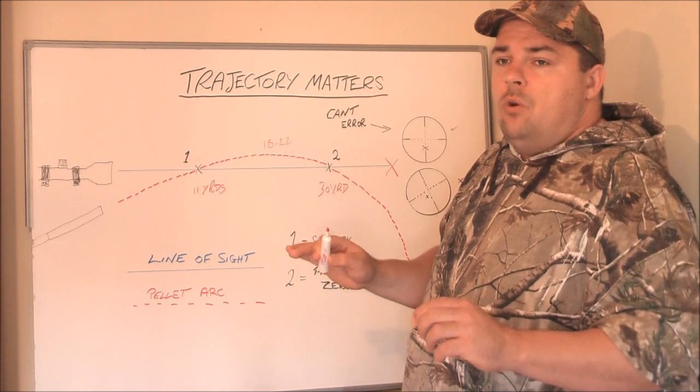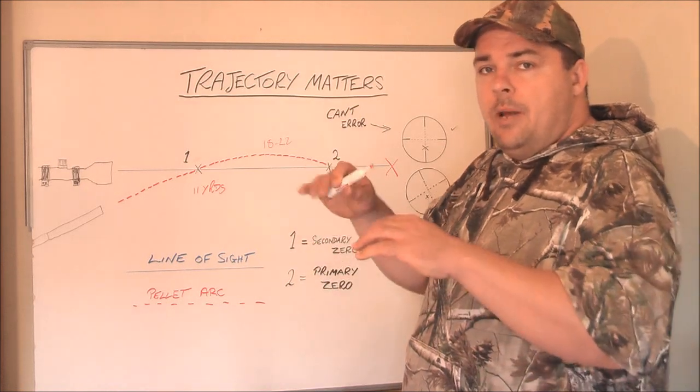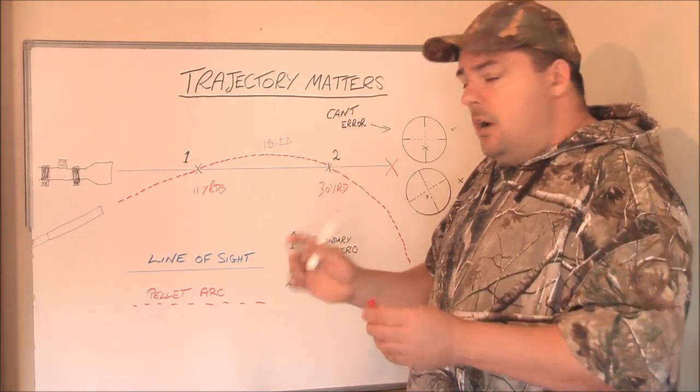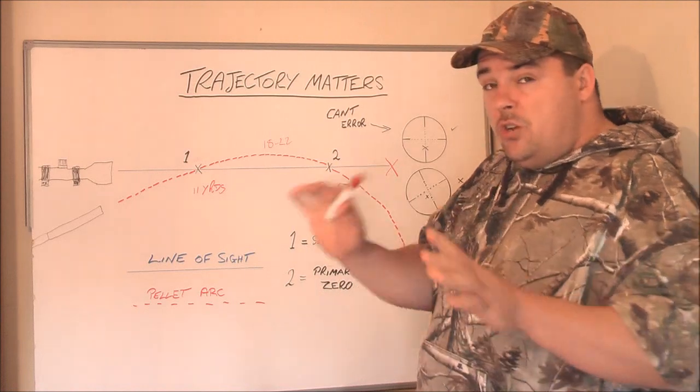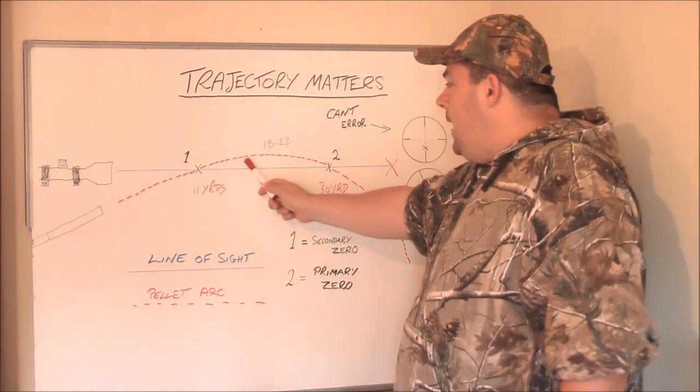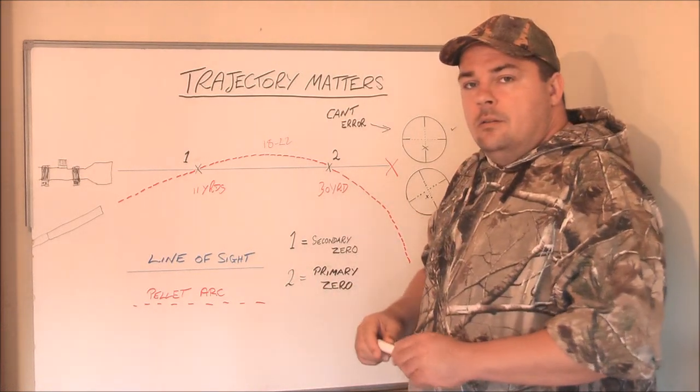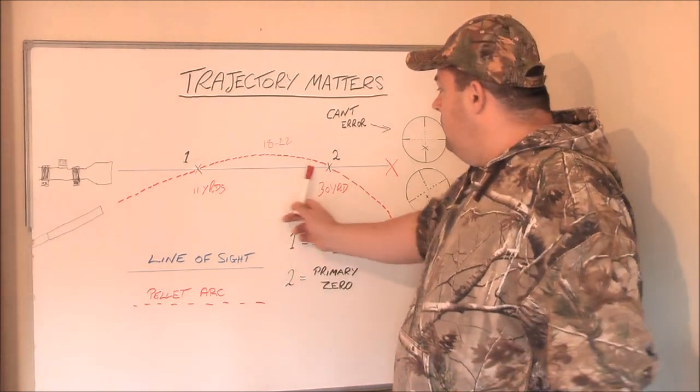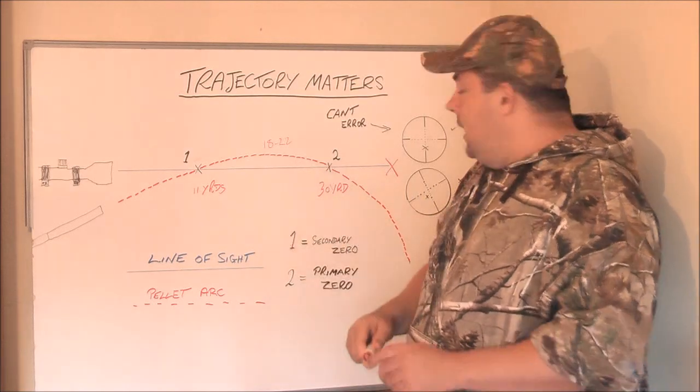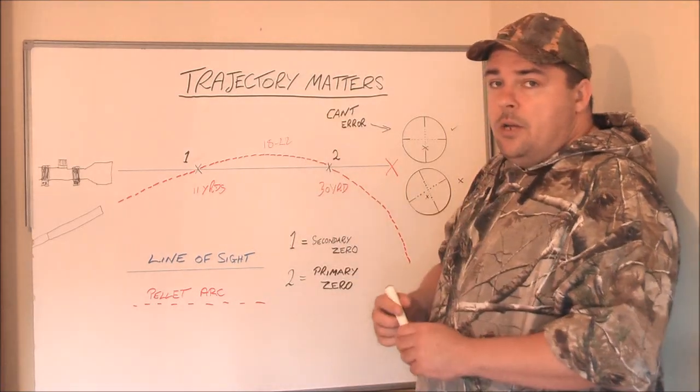This is all, these are all hypothetical numbers. Because it depends on what magnification you've got the scope set to and so on. But just so you get a general idea. Here you will be holding under. When you get out to 30 yards, you will be able to aim bang on your crosshairs again, if this is where you've zeroed your gun.